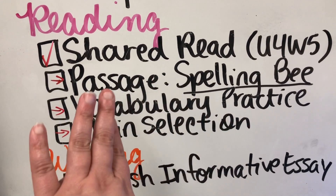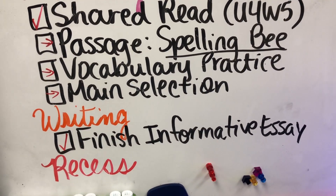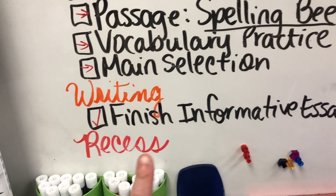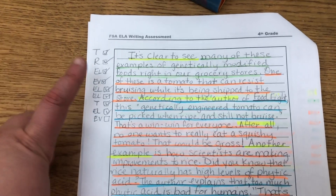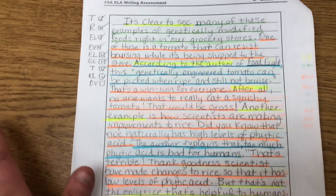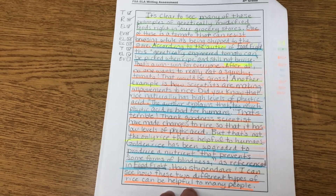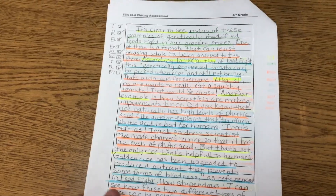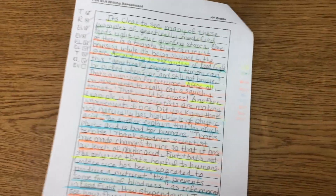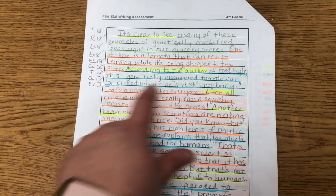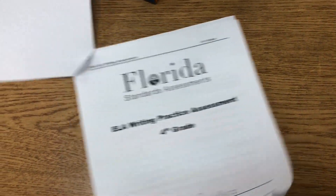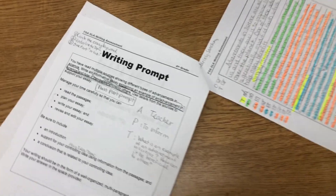Then we went ahead and worked on finishing our informative essay. Here is the second body paragraph — we still haven't finished it, but it's pretty well written with a lot of information. There's one more thing we're going to write about, which is Bt corn. I did color code it so students could see the different parts of this paragraph compared to the other and all the intrinsic transitions. They have one more page to finish that paragraph, write their last paragraph, and their conclusion is going to be short. Then we'll be done with this essay on advancements in science.